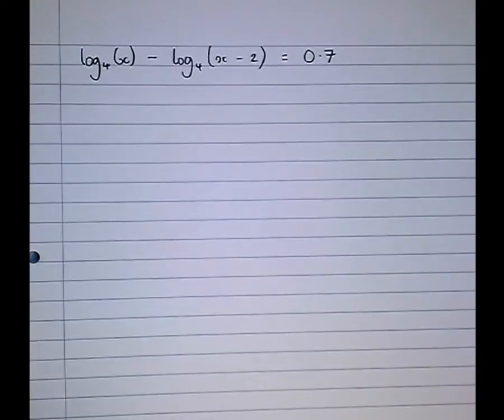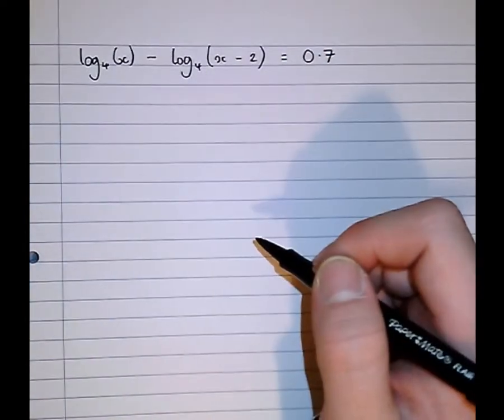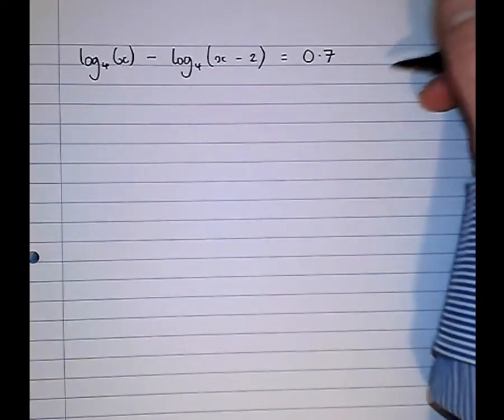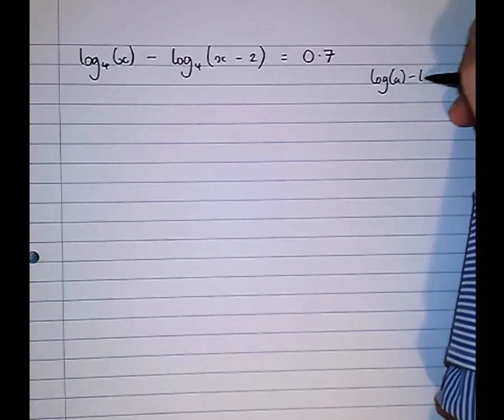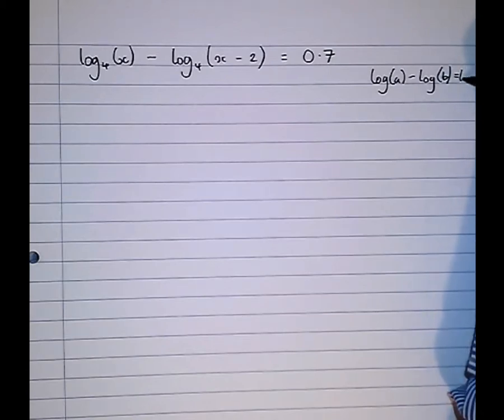So there's nothing we can yet do here because there's logarithm terms scattered all over the place. For this to be solved we need a single term on each side. So what we're first going to do is combine these using logarithm laws. We're going to use the subtraction rule which you need to know: log a minus log b equals log of a over b.